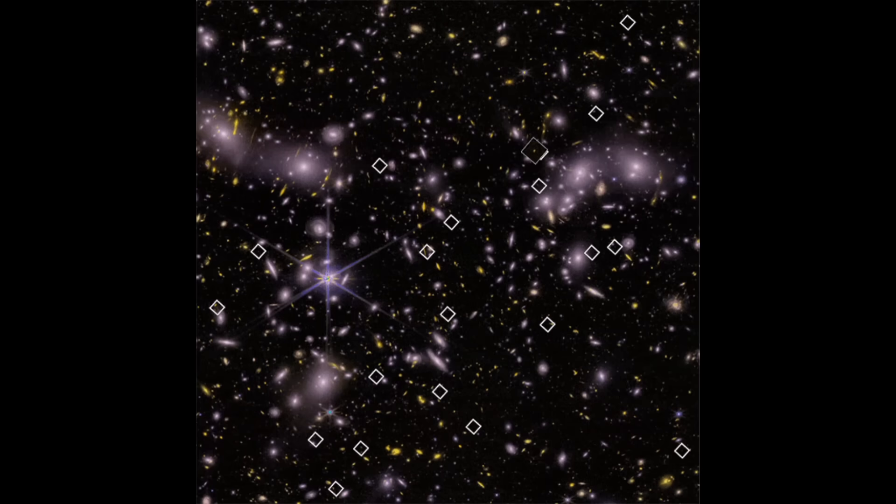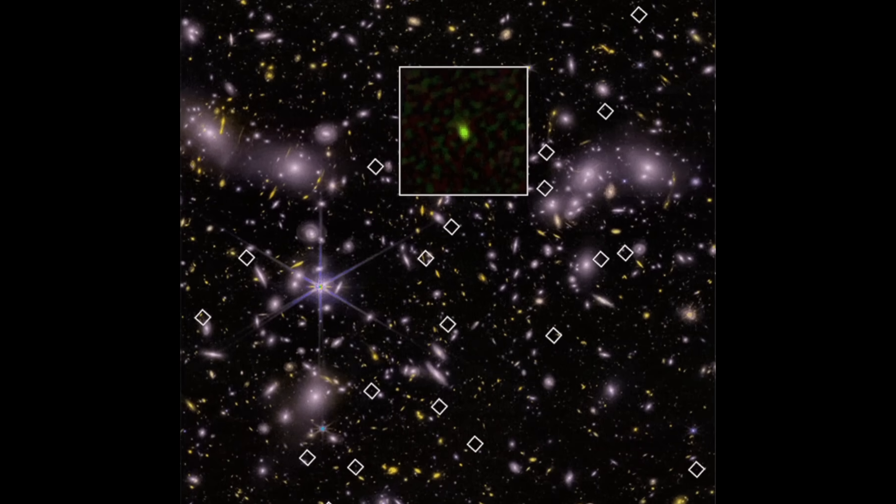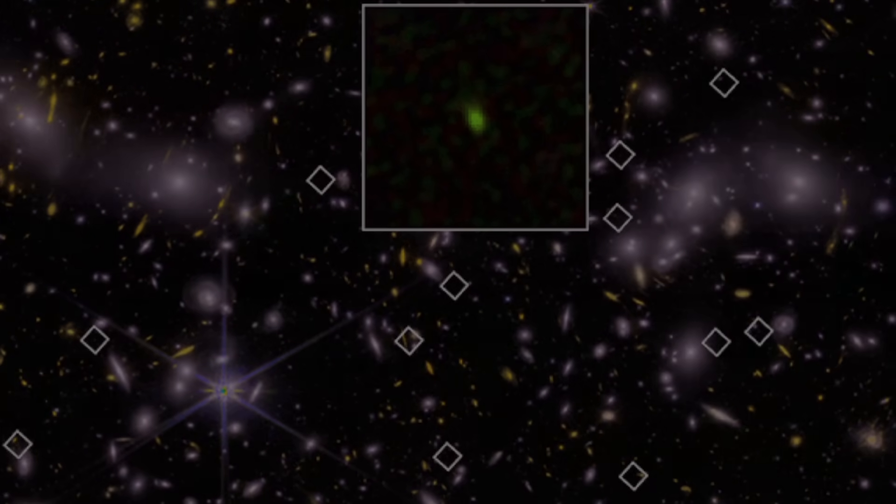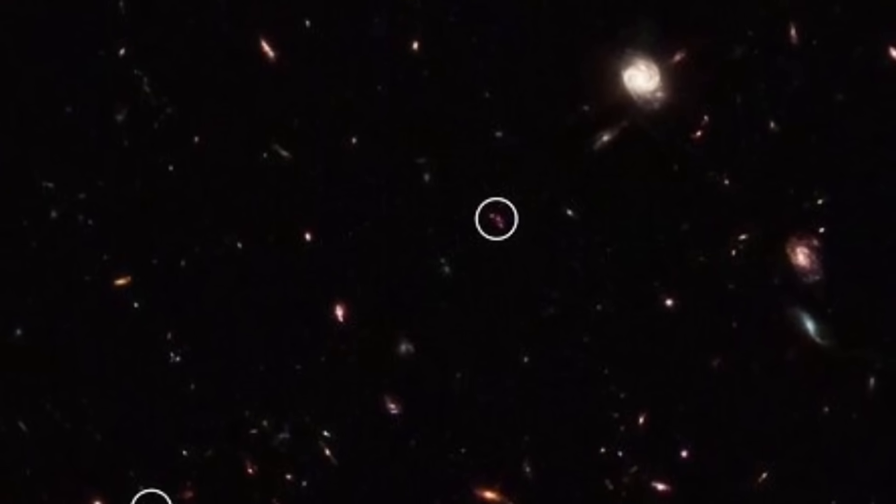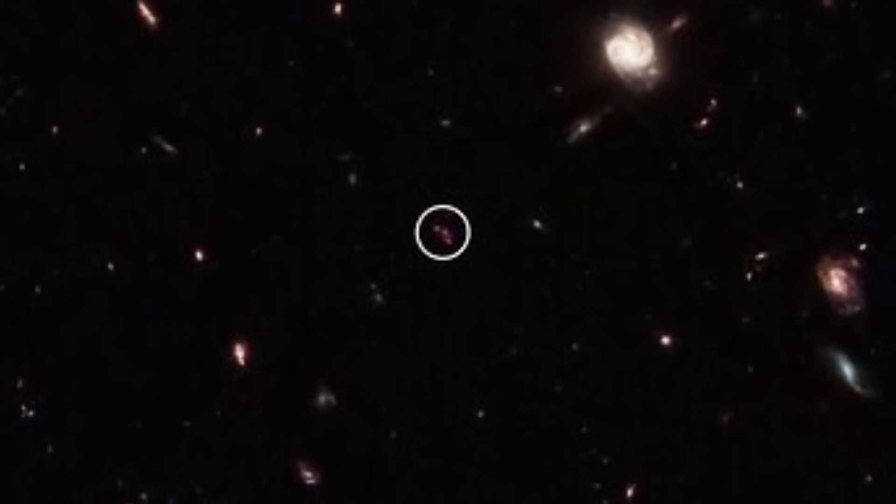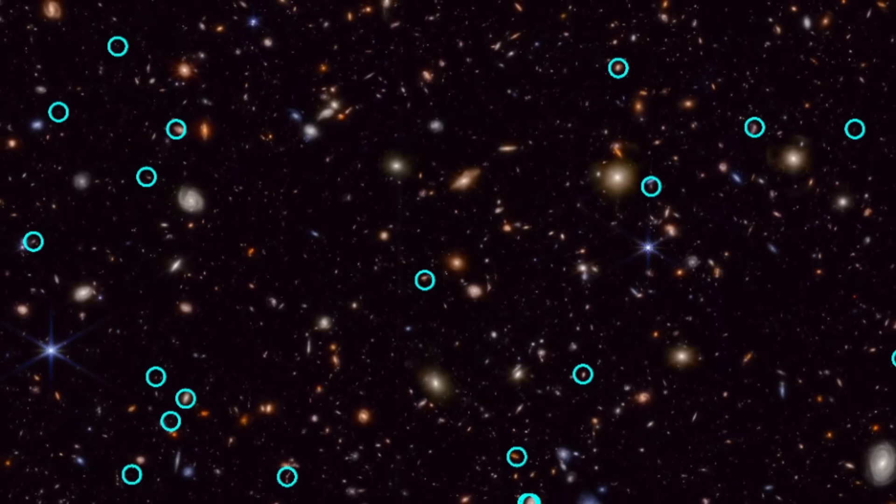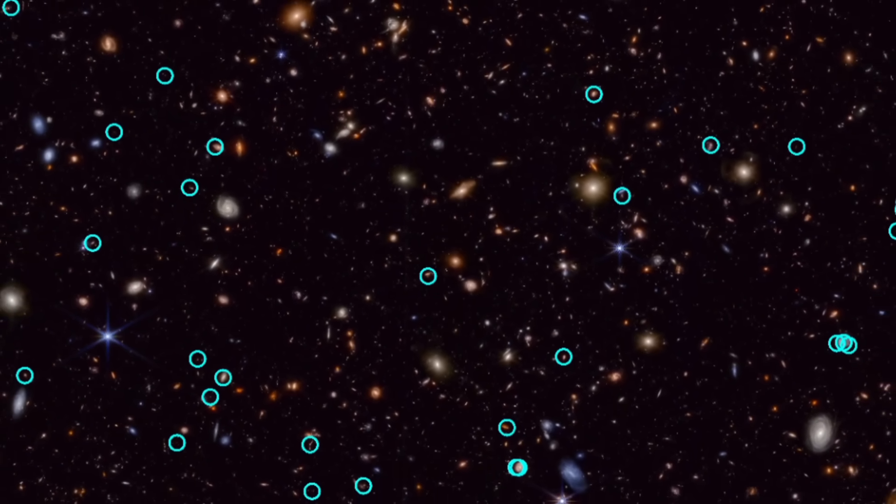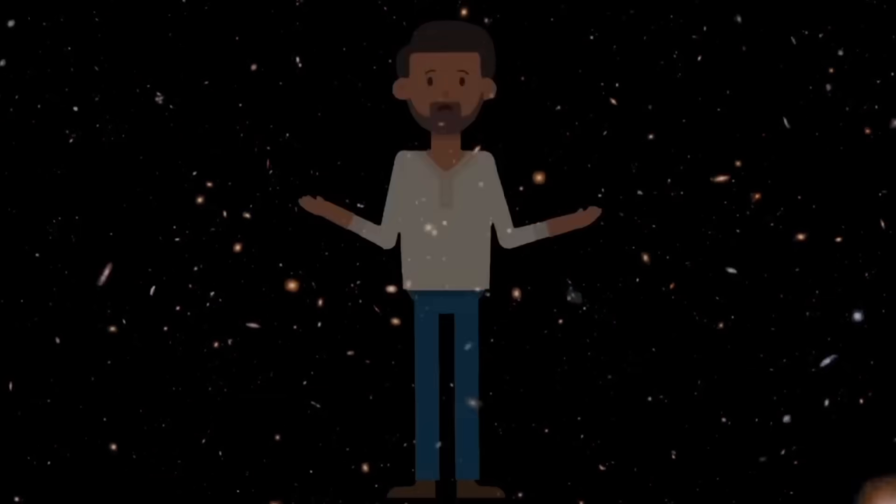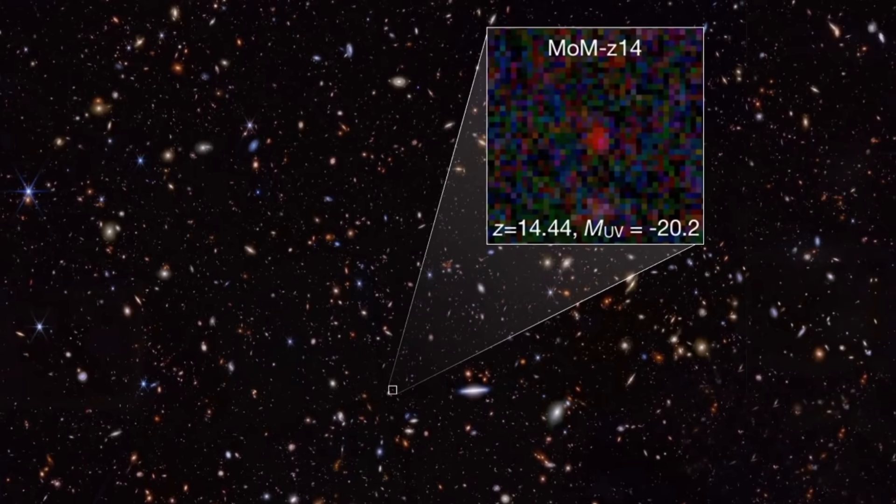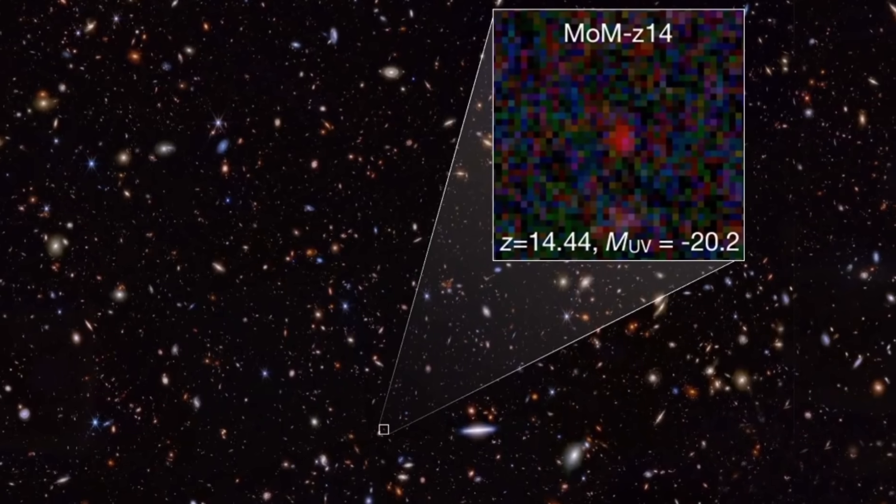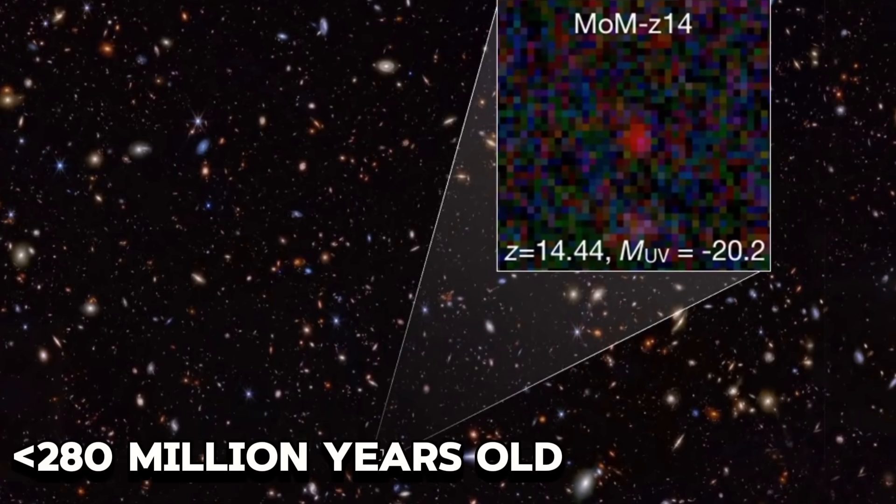In the latest Webb images, scientists are discovering galaxies at record-breaking distances. This means the deeper we look into the early universe, the more galaxies we're finding, almost like there's no end to them. And that's a big problem for the current dark matter model, because it can't explain how such distant early galaxies could already exist. One of the most distant confirmed galaxies so far is MOMZ-14, which existed when the universe was less than 280 million years old.